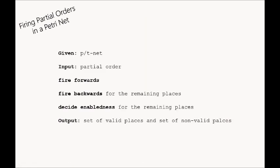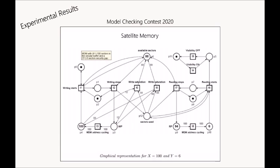That's how to fire a partial order in a Petri net. Given a Petri net and a partial order as input — noting that when firing the partial order you need a total order respecting the partial order, so either it's given or you need to calculate it — you fire forward, then for the remaining places you fire backward, then decide enabledness for the remaining places. You get the set of valid and non-valid places. If all places are valid, then the partial order is enabled in the Petri net.